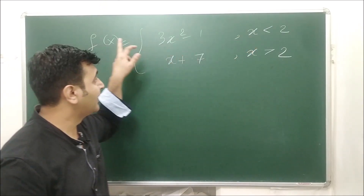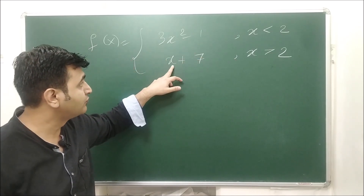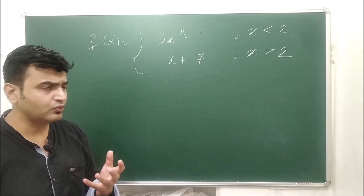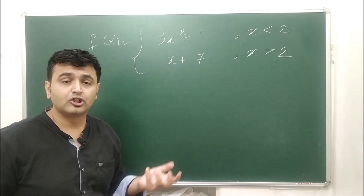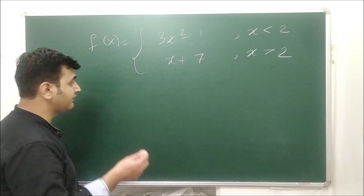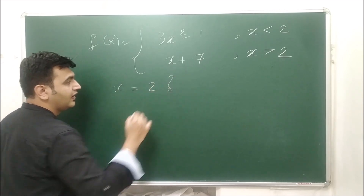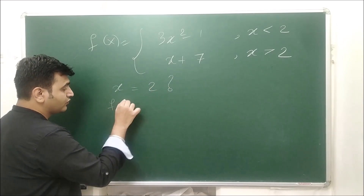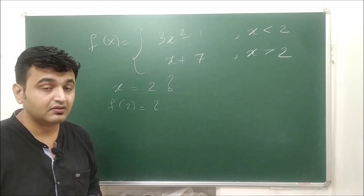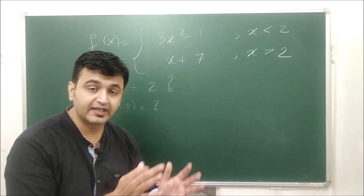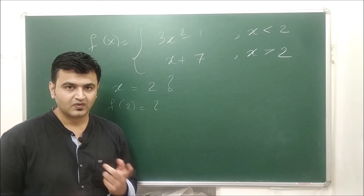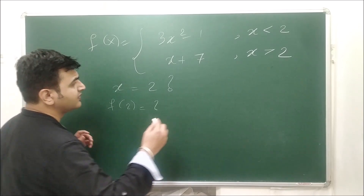Here is a worked example. For x < 2, the function is 3x² − 1; for x > 2, the function is x + 7. We need to check continuity at x = 2 because both pieces are polynomials and are continuous on their respective domains — the only question is the boundary. Is f(2) well-defined? No — nothing is given for x = 2, so f(2) is not defined. Therefore, the function is not continuous at x = 2.